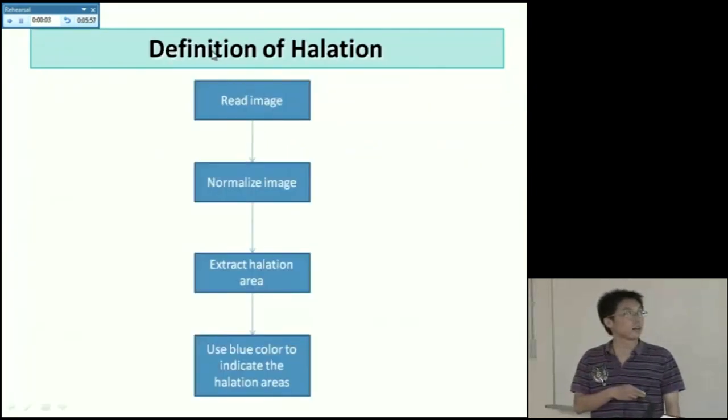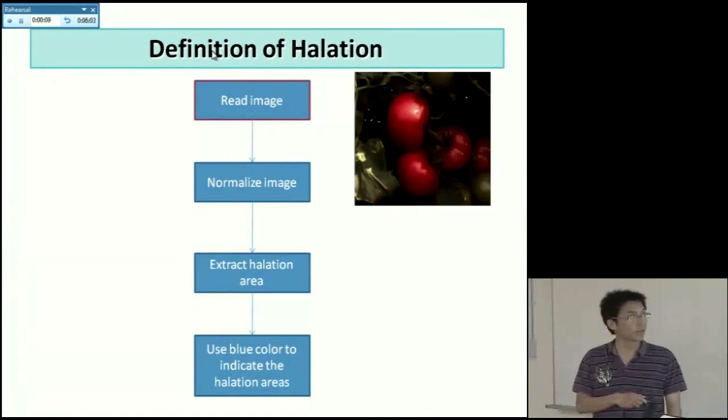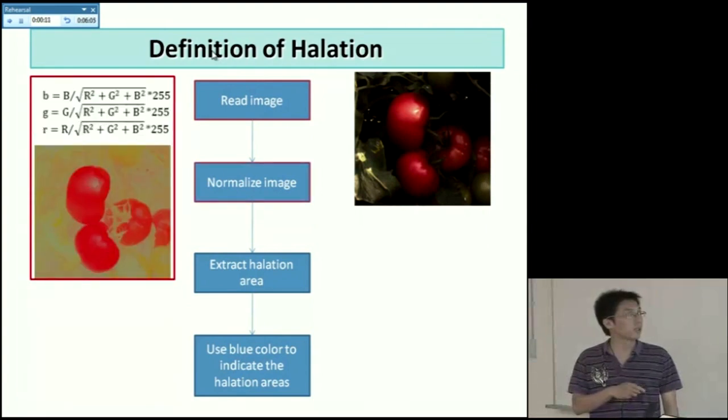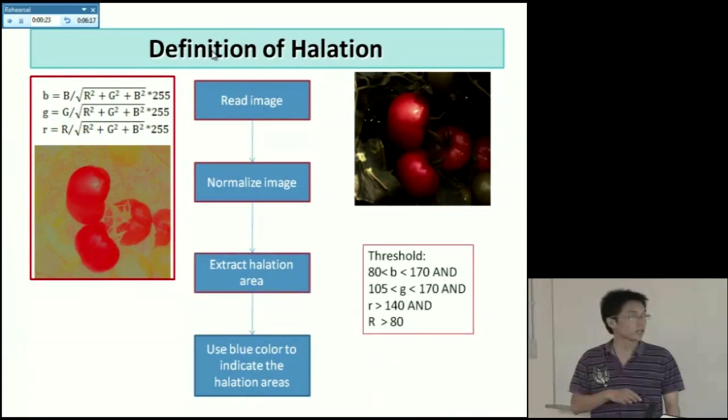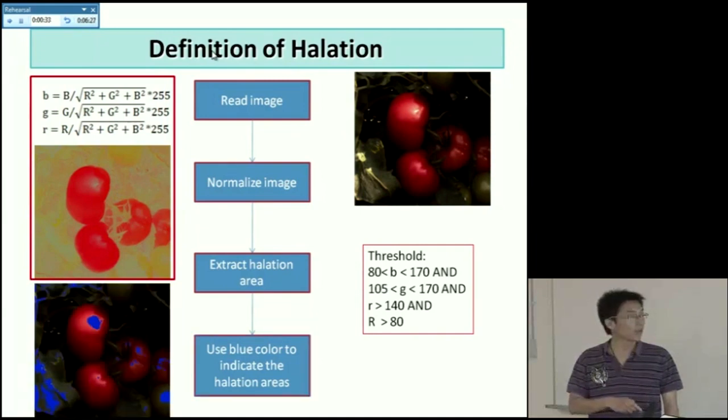Here is how I define the halation in my experiment. First, I read an image with RGB value. And then normalize the image by this equation. Here we can get some normalized RGB value. And this is a normalized image. Then after getting this, we extract the halation area by this threshold. Here I use the normalized RGB and also the original from the original image. Finally, I use a blue color to indicate the halation areas in the original image.